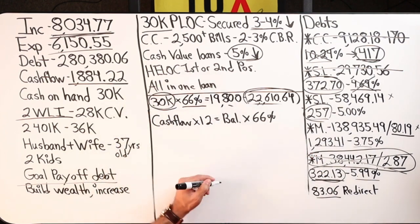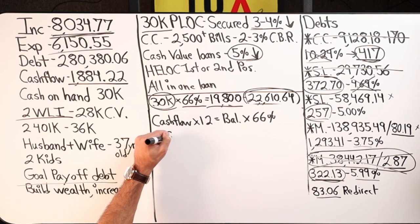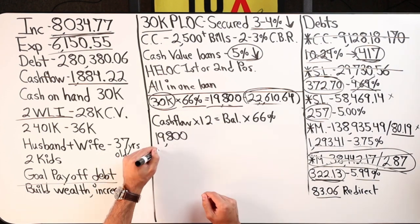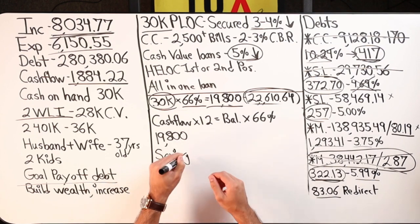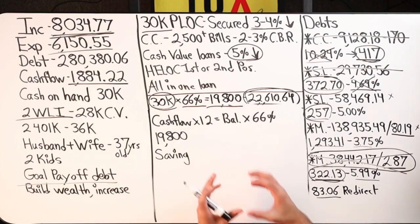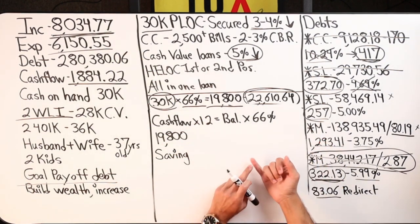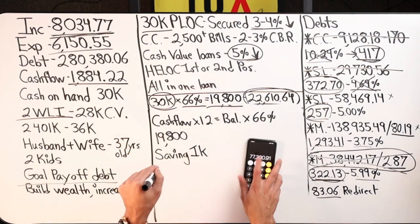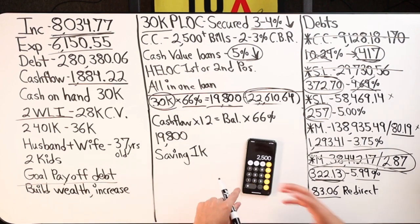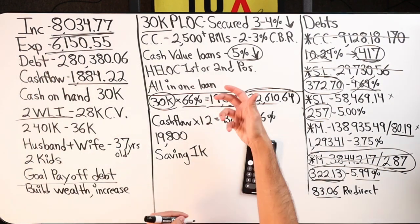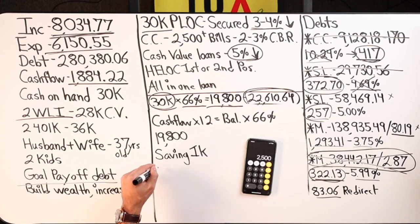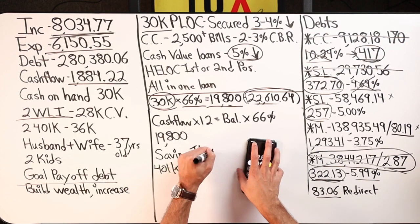Let's say a person cash flows $30,000 a year — $19,800 would be my starter number. Then I look at other equations: how much money are they saving? Because that's typically the dollars we're allocating to infinite banking in the first place. So if this person is saving $1,000 a year and cash flowing $30,000 a year — that's $2,500 a month — and they're also putting another $1,000 a month into their 401k, that's $12,000 each.